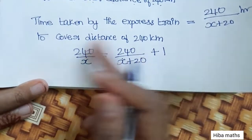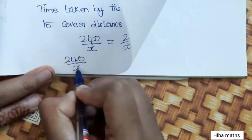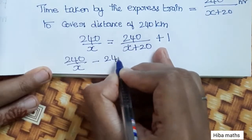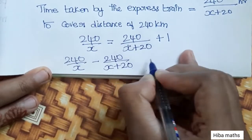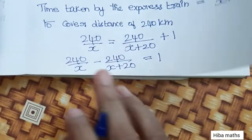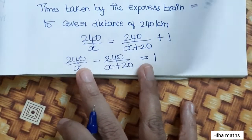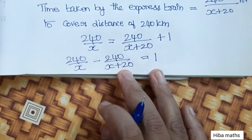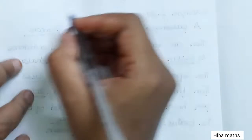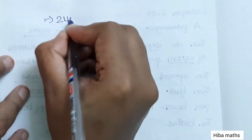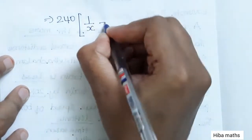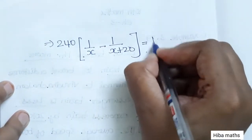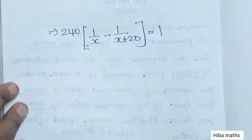So the equation is: 240 by x minus 240 by x plus 20 equals 1. Since 240 is common, we can factor: 240 times (1 by x minus 1 by x plus 20) equals 1.